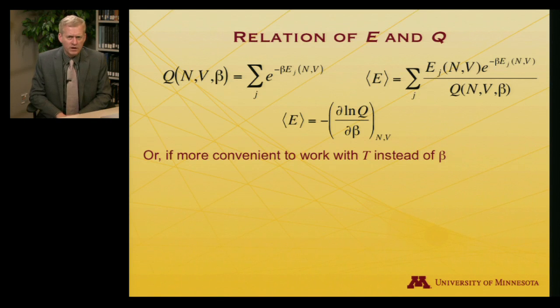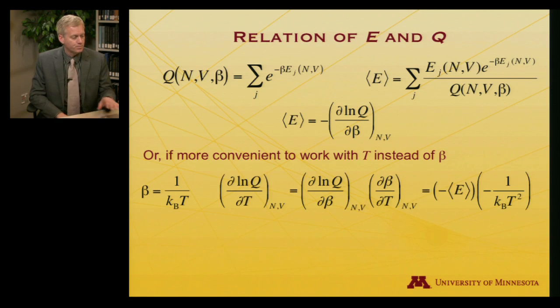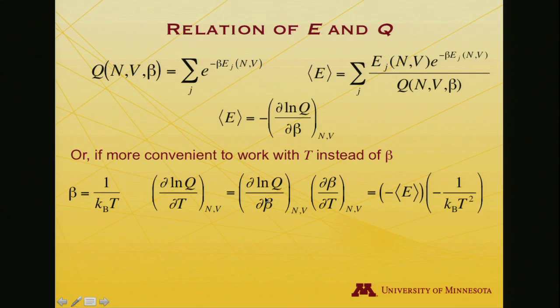Note that on occasion, it's more convenient to work with temperature directly than with beta, which you'll recall is 1 over kT. In that instance, given that beta is 1 over kT, I can use the chain rule. I can establish that the partial derivative of the log of Q with respect to temperature equals partial log Q partial beta times partial beta partial T.